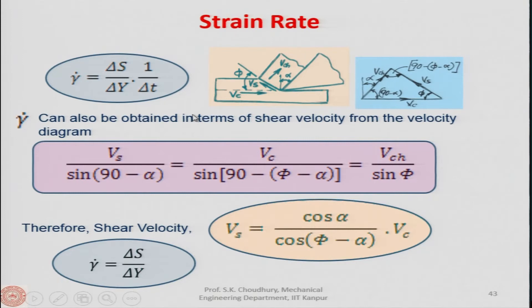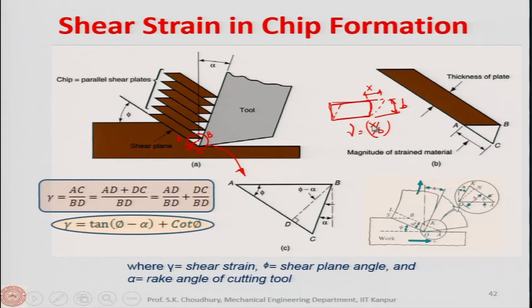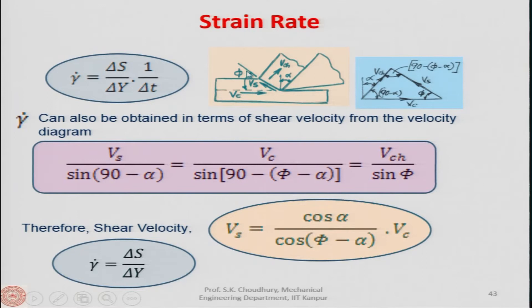The strain rate involves time. Strain rate = (δs/δy) / δt. From the velocity diagram showing cutting velocity Vc, shear velocity Vs, and chip velocity Vch and their respective angles, it would be difficult to find δs/δy and 1/δt directly. So we use the velocity diagram.